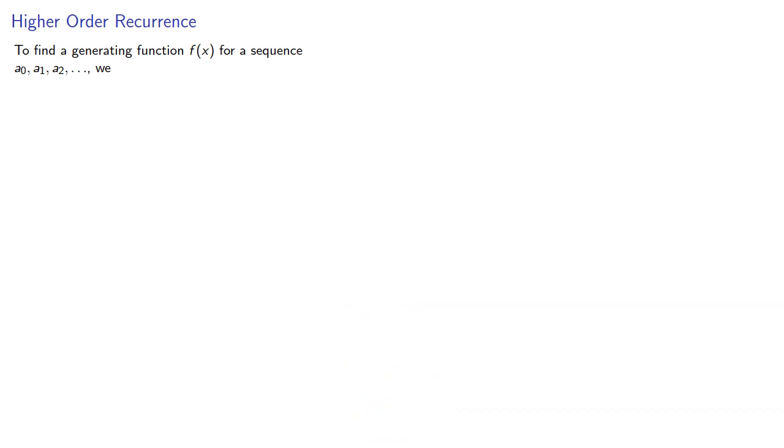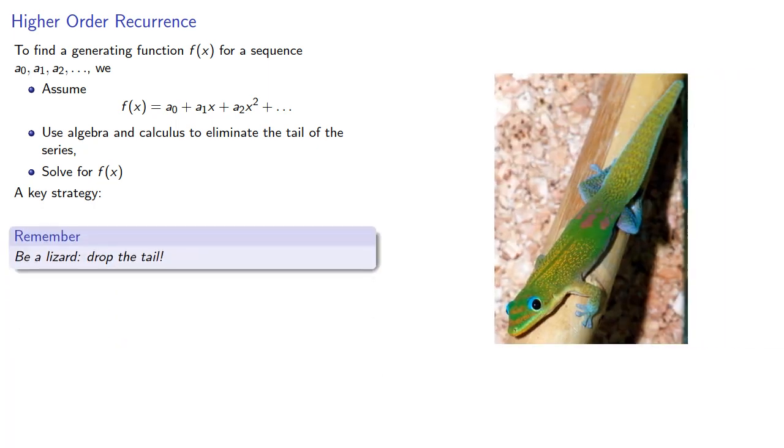To find a generating function for a sequence, we assume some function given as a power series, then we use algebra and calculus to eliminate the tail of the series and solve for f. And all of this revolves around our key strategy: be a lizard and drop the tail.